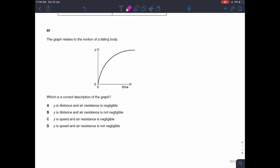Question 40. The graph relates to the motion of a falling body, which is a correct description of the graph. So we're trying to figure out what is Y. Is it speed time or is it distance time graph, and also whether air resistance is negligible. Well, the motion of a falling body here, whatever Y is, whatever change in Y over change in time is, is at its greatest.